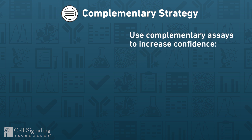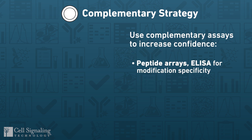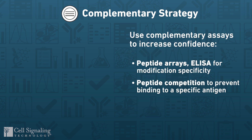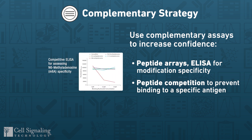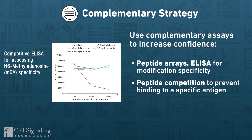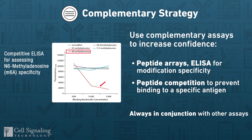Finally, complementary strategies such as competitive binding analysis can provide valuable supporting information on antibody specificity or functionality, and are particularly useful for validating antibodies specific for unique post-translational modifications. We always use complementary strategies in conjunction with assays performed using the other validation hallmarks.